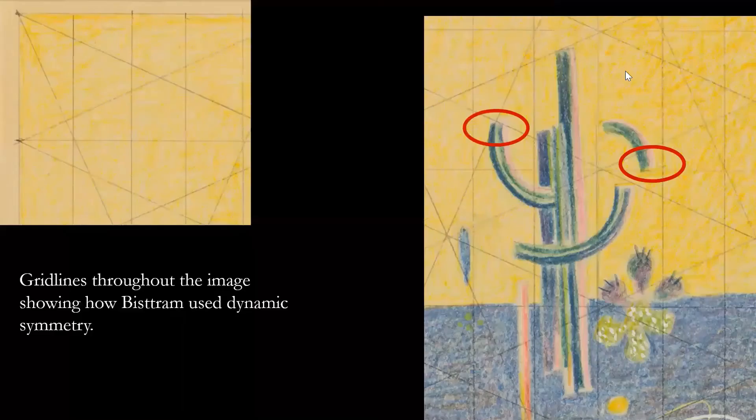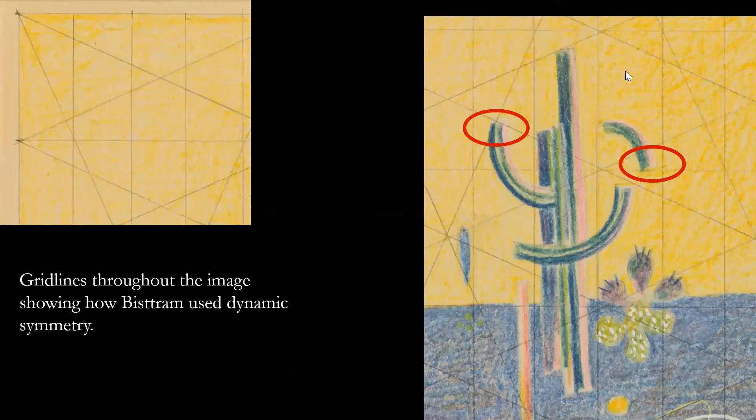The piece itself shows evidence of dynamic symmetry with the penciled grid lines you can see underneath the image. We also see it in the cactus. Notice how the arms do not directly connect with the trunk and how the ends of the arms intersect with different points of the grid lines underneath the image.